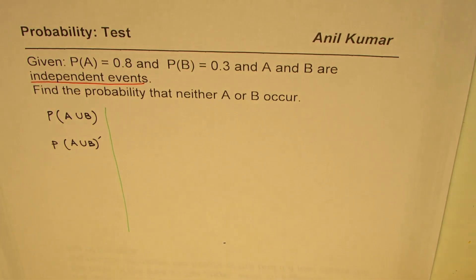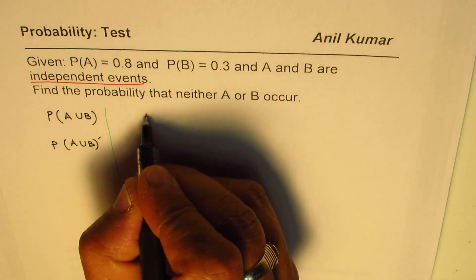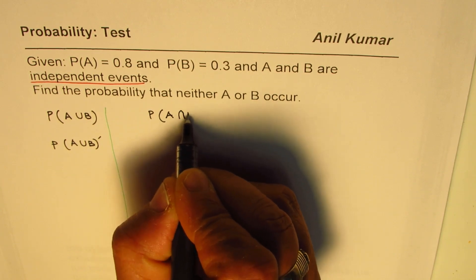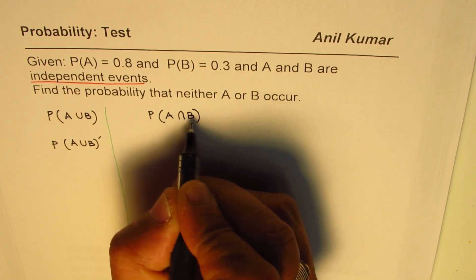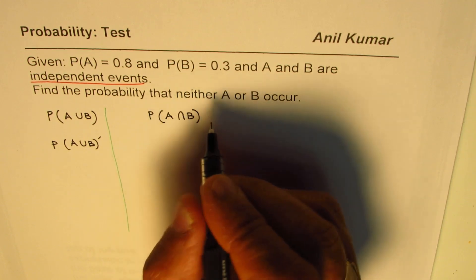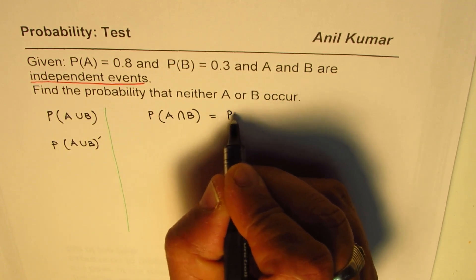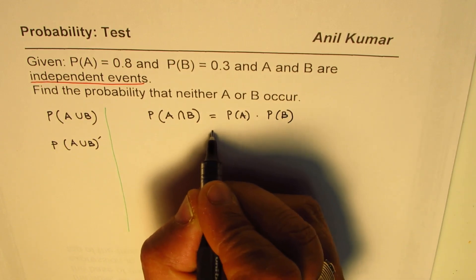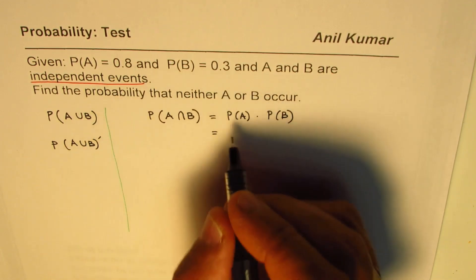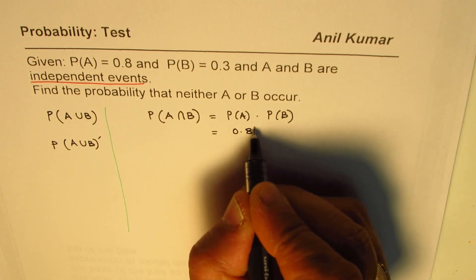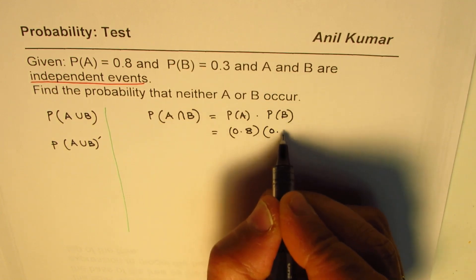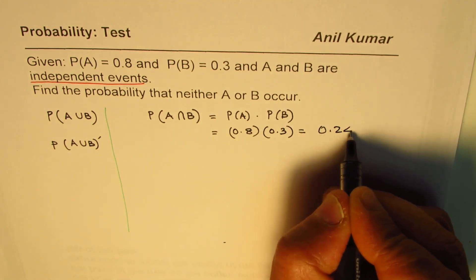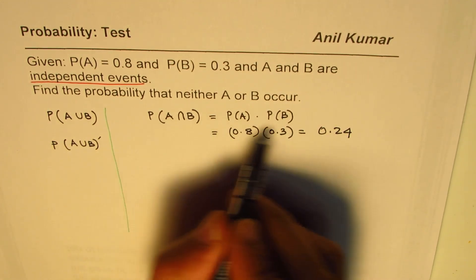What does that signify? That really signifies that probability of A intersection B, both to occur at the same time, is probability of A times probability of B. That gives you probability of A is 0.8 times probability of B is 0.3 and that is 0.24. So 0.24 is the probability of both to occur.